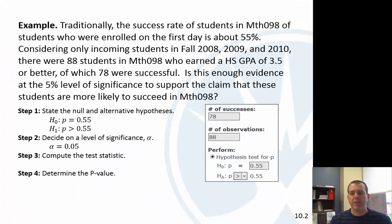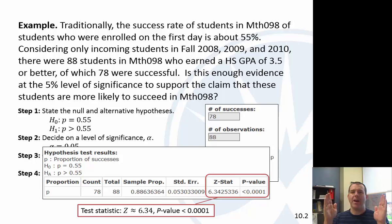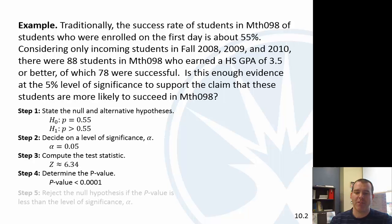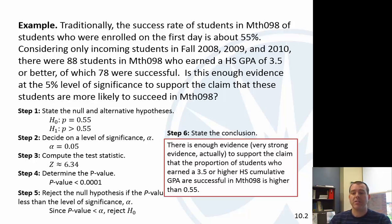StatCrunch gives us a really really small p-value. The test statistic is z approximately 6.34. Think about what you know about z — pretty much all the data falls within a few standard deviations of the mean, and here we have 6.34. That is a really extremely unusual observation.